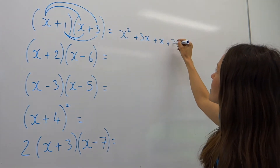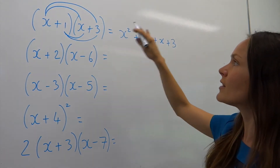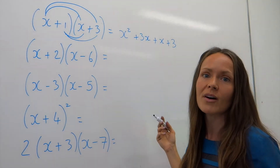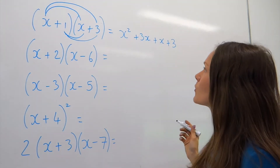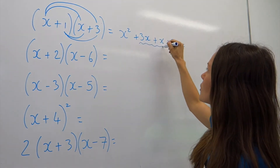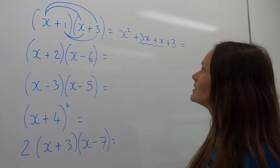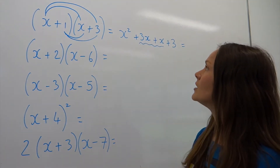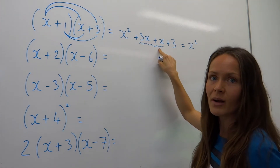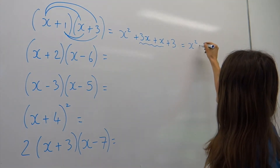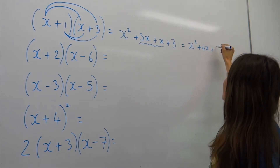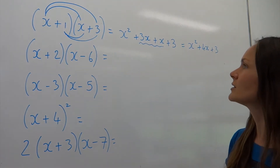So we've done the expansion of these brackets, however we do need to simplify. If you don't simplify it then you won't get full marks for the question. You can see there's an x term here and an x term here, so we can add those two together. x squared remains the same, and 3x plus 1x is 4x, so I write plus 4x, and then the 3 just stays the same. So that's the first question done.